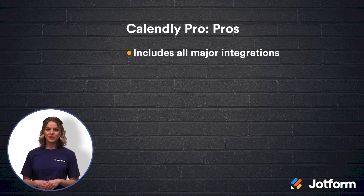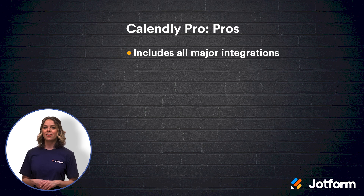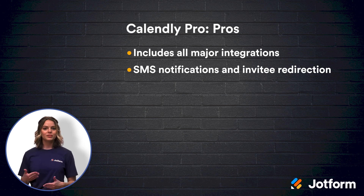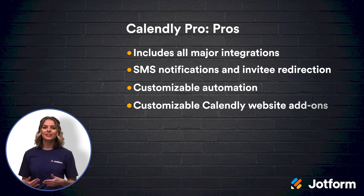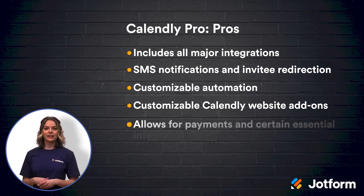Here's a comprehensive look at the Pro Plan's pros and cons. Pros: all major integrations like Salesforce, HubSpot, Google Analytics, MailChimp, Stripe, and PayPal are all included. You can utilize SMS notifications and invitee redirection. You can add workflows and customizable meeting automation. And while you're customizing, you can also completely customize your Calendly website add-on. Pro is the only plan that allows for payments and certain essential integrations.